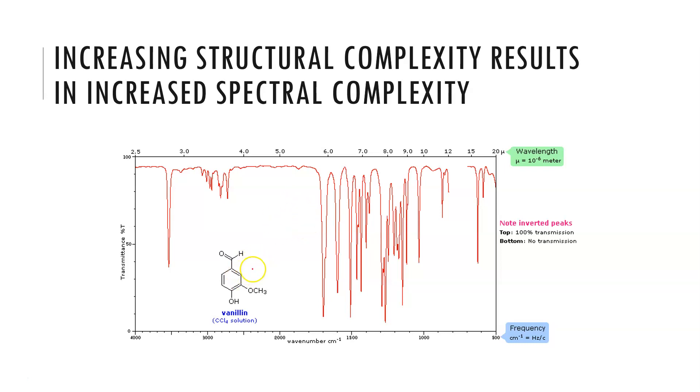If we look at vanillin, we can see we have an aldehyde, an ether, and an OH. This will be our OH alcohol stretch here above 3000, which is much sharper than what we see for an OH acid. Here we will have our aldehyde C=O. We will also see peaks for the CHs from our benzene ring and various other things, and then our fingerprint region gets a lot more complex.